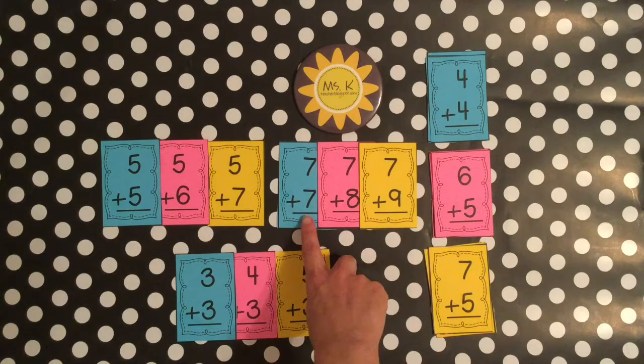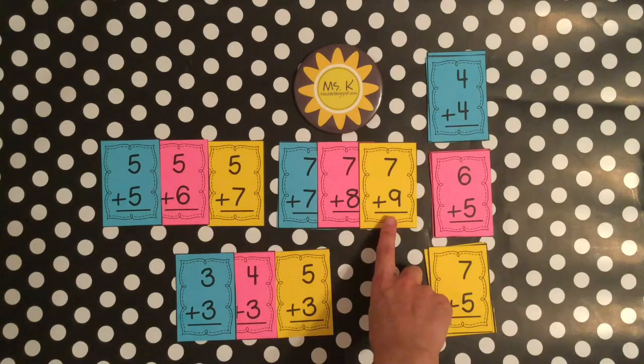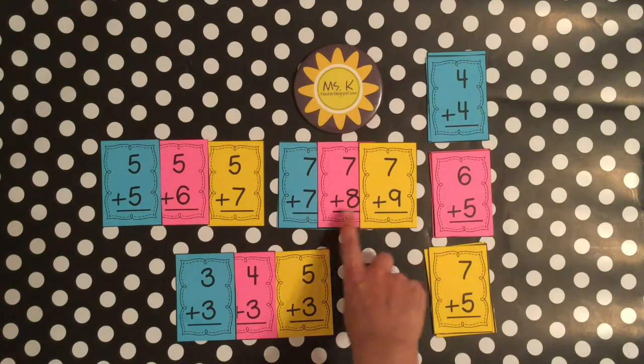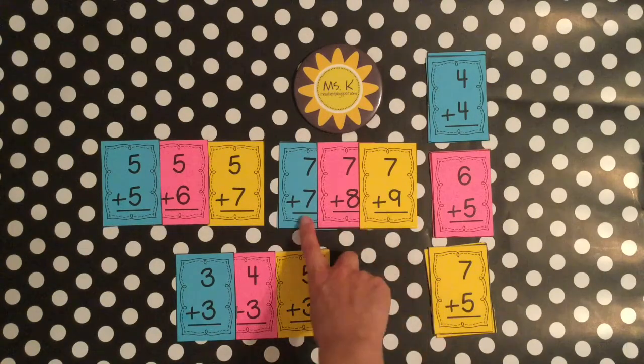So they could either count up seven plus seven, seven plus eight is one more, and seven plus nine is 16 because it's two more than 14, two more than the double.